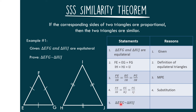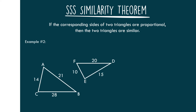Let's have our last example for SSS similarity. Let's have these two figures and determine whether these two triangles are similar. Let us find the corresponding sides: FE corresponds to AC, ED corresponds to AD, and FD corresponds to CD. Therefore, the ratios are FE over AC, ED over AD, and FD over CD.